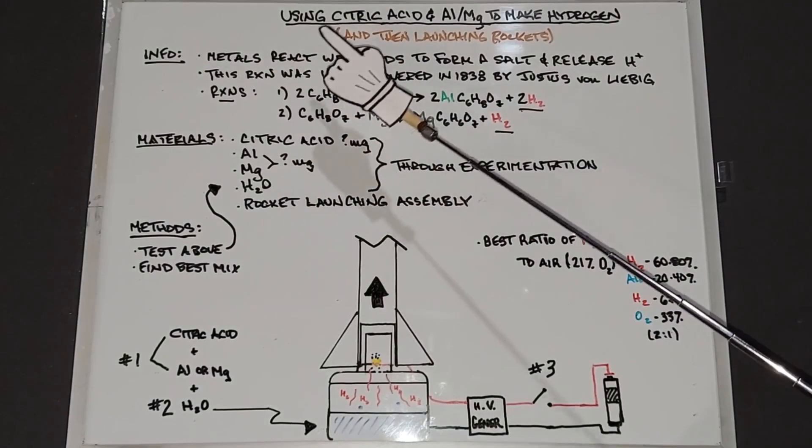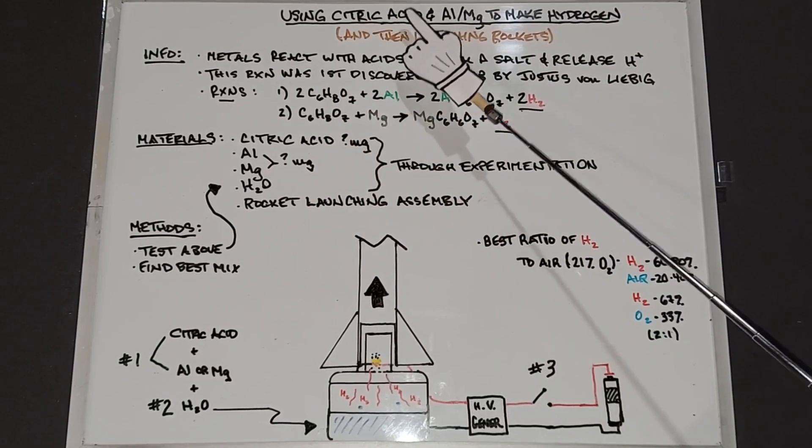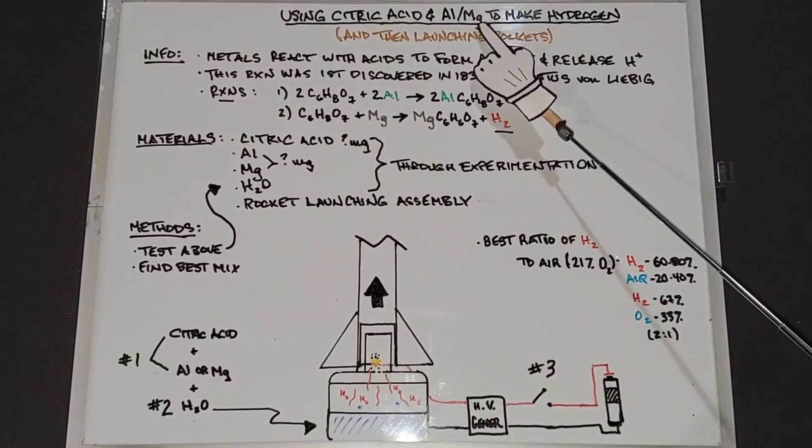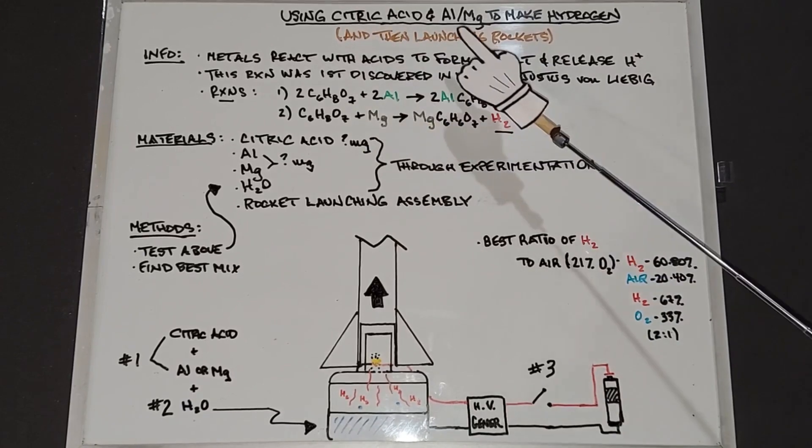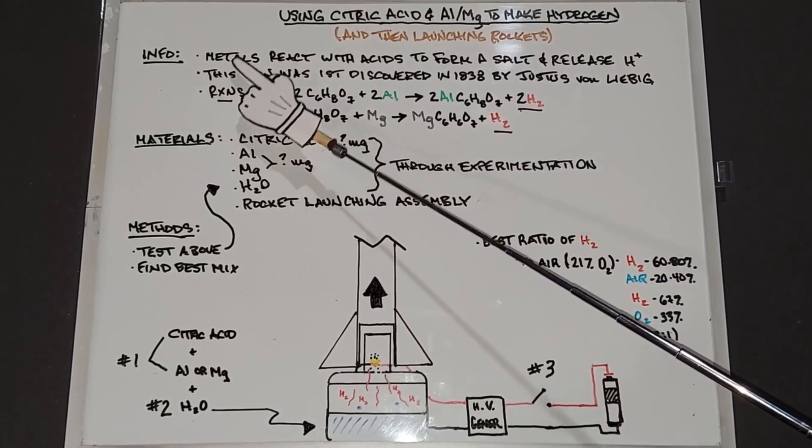In this upcoming video, I'm going to look at a couple things. The first one is using citric acid and aluminum or magnesium to make hydrogen. Secondly, to use that hydrogen to launch a rocket.